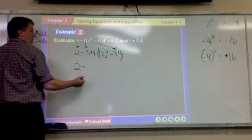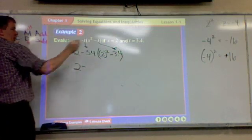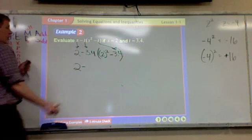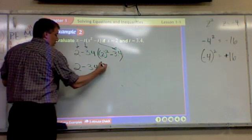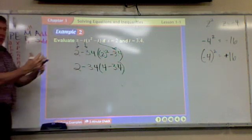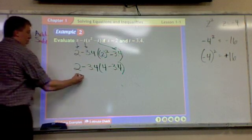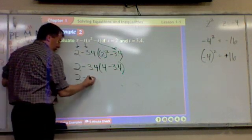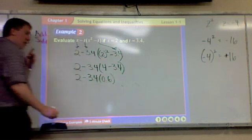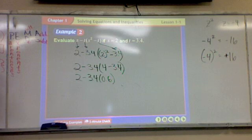2 minus, which one's first, by the way? Out of everything. Parentheses. And inside those parentheses, what do you have? Exponents. So what is 2 squared? 4. So we're still in the parentheses. We're going to keep working with the parentheses so it's done. What is 4 minus 3.4? 0.6. And 3.4 times 0.6 is negative 2.04.